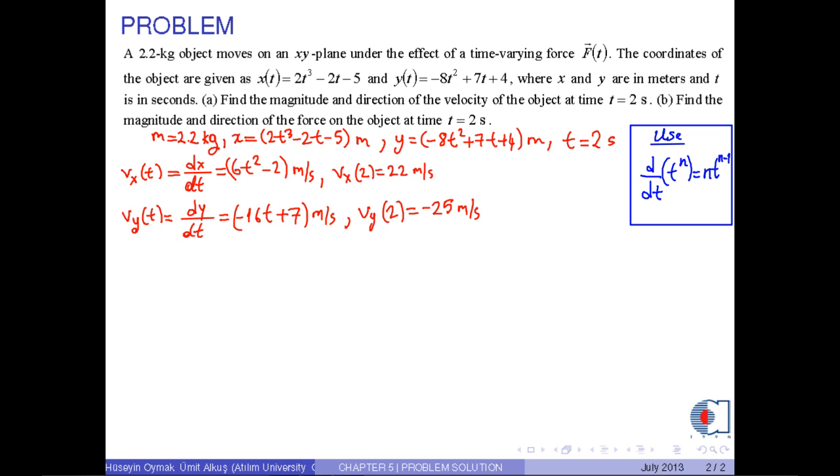Similarly, since the acceleration is the first time derivative of the velocity, we have ax(t) = dvx/dt, which is 12t meters per second squared. Then the x component of the acceleration at t = 2 seconds is 24 meters per second squared. Similarly, ay(2) = -16 meters per second squared.